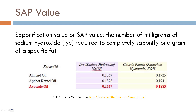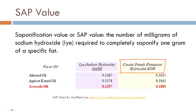One thing you need to notice is that there are two values in these charts: one for sodium hydroxide and one for potassium hydroxide. So you want to make sure that if you're making bar soap you are using the sodium hydroxide value.